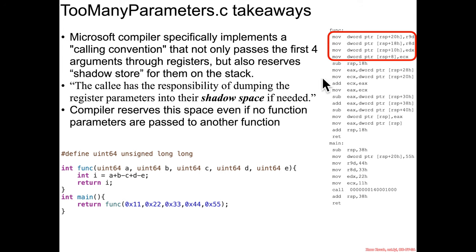And as stated before in the documentation, the compiler reserves this space even if no function parameters are passed to another function and even if the callee isn't going to do anything with that space.